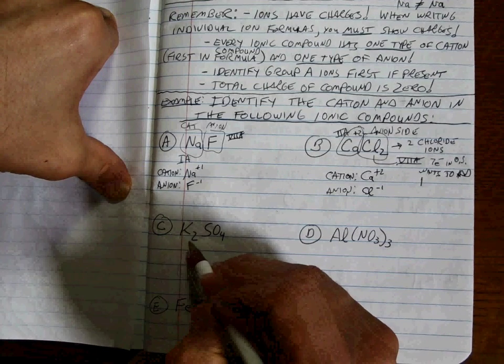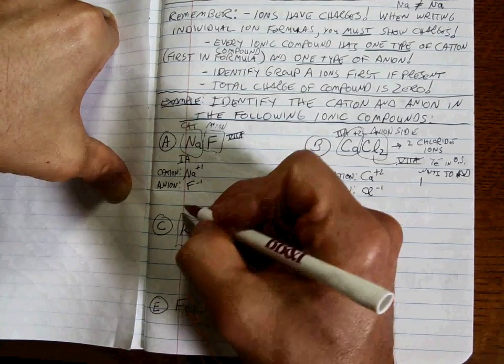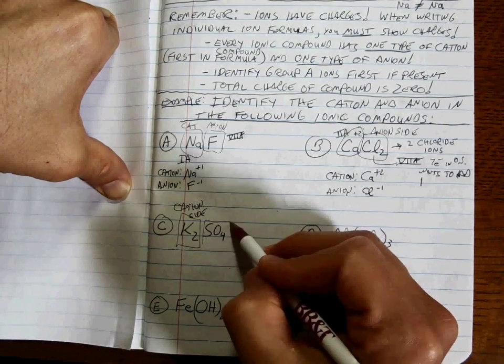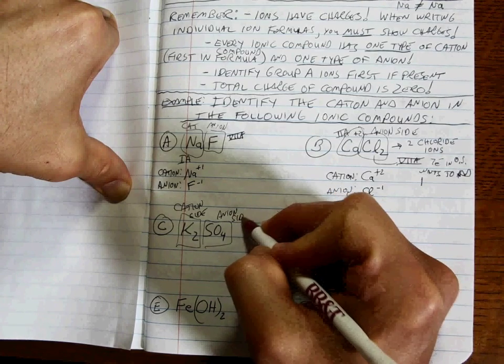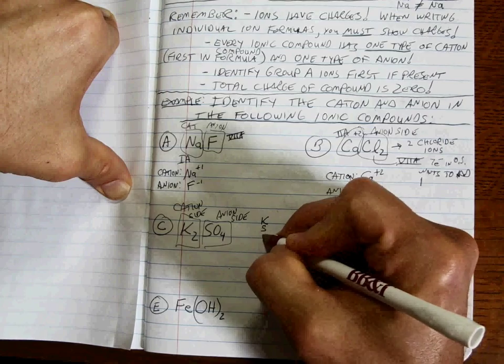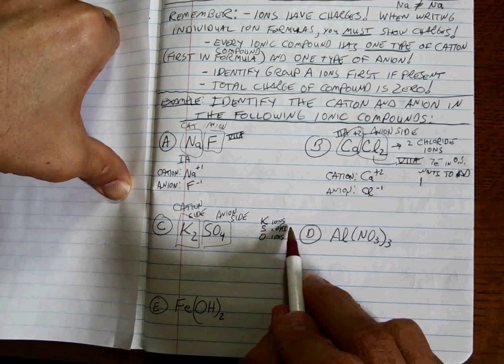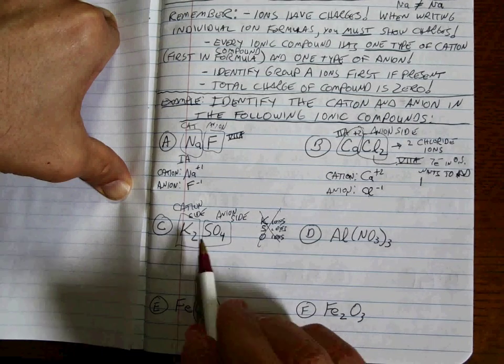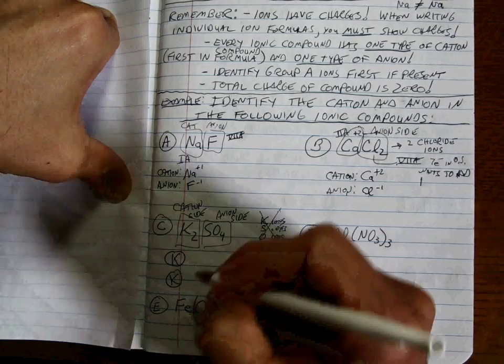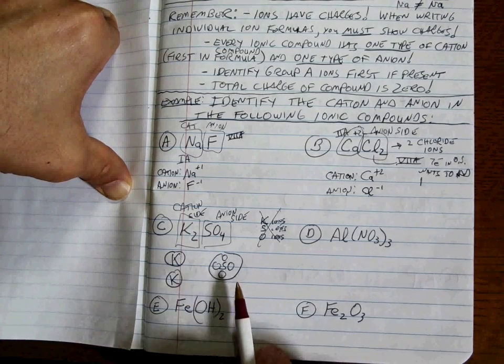C is where we start to maybe run into things that are a little bit more involved. I need you to understand that this is the cation side, because the cation always comes first. And so, therefore, the rest of this is the anion side. You have to be ready to identify a polyatomic ion. What is not true is there are not K, S, and O ions. That is not true because, remember, we need one type of cation and one type of anion. So, when you look at this, I want you to see two K ions and one SO4 ion. And then it's up to you to figure out what those charges are.